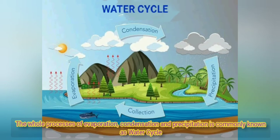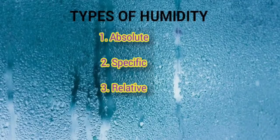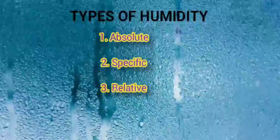The whole process of evaporation, condensation, and precipitation is commonly known as the water cycle. There are three types of humidity: number one, absolute; number two, specific; number three, relative.